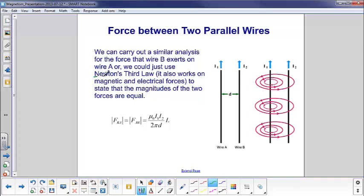Newton's third law. Newton's third law doesn't just work for mechanics. It also works for electricity. It works for magnetism. So, whatever force that wire A exerted on B, wire B must exert on wire A. So, I'm just going to take that shortcut for now, and the force that each wire exerts on each other is mu0 I1 I2 times L over 2 pi d.